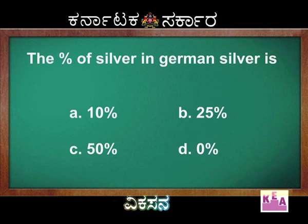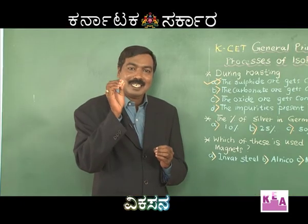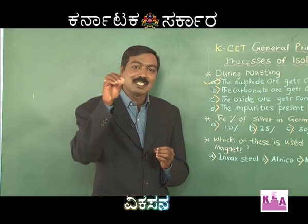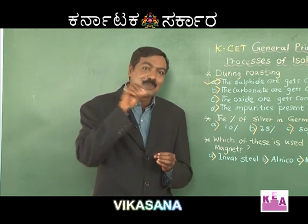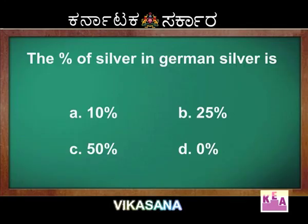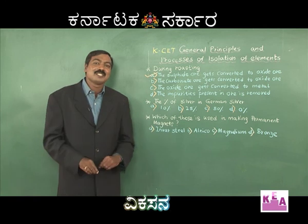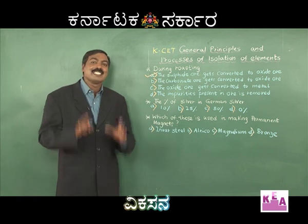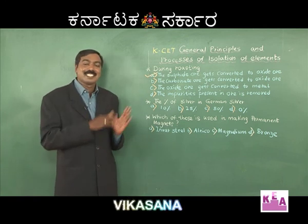There's a catch here. Because the word clearly says 'German silver,' we might think there is silver in it. But the percentage of silver in German silver is nil. It's just a name.